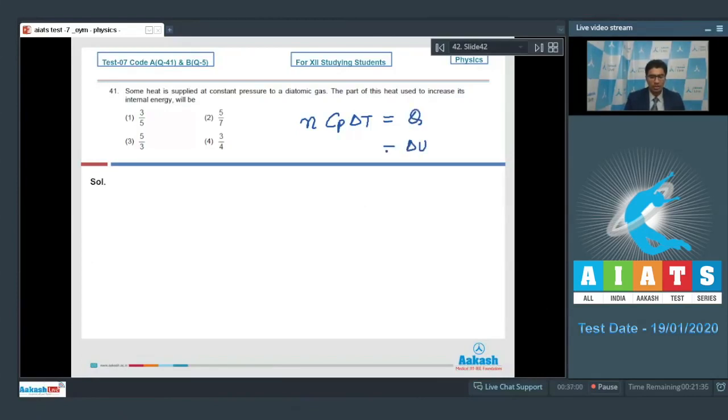The internal energy change will be equal to N Cv delta T, where Cv is the molar specific heat capacity at constant volume. We have to find out what fraction of Q is delta U, which means we have to find out delta U by Q, which will be equal to Cv by Cp.